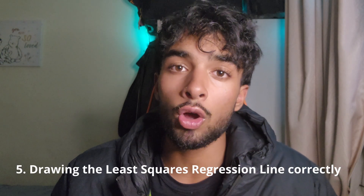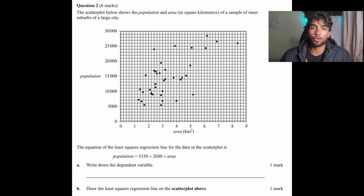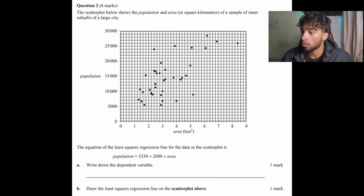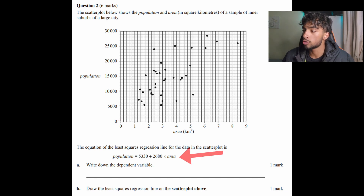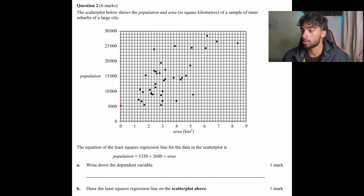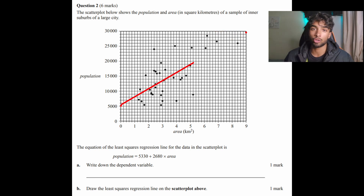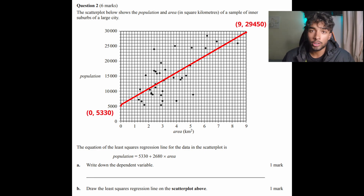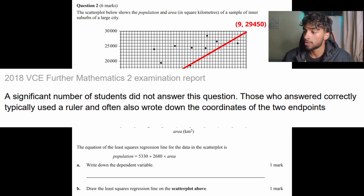Number 5: drawing your least squares regression line correctly. You'll often find a question asking you to draw the least squares regression line on a scatterplot. First, find the leftmost x value — here it's 0 — substitute it into the equation to get 5,330. Then find the rightmost x value — here it's 9 — and substituting gives 29,450, plotted around here. Plot these two points, then use a ruler to draw a line connecting them, and write the coordinates of the two endpoints. Drawing the linear regression line this way is highly recommended by reports on VCAR.